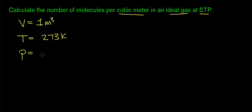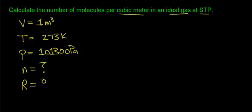Our pressure P will be 1 atmosphere or 101,300 pascals. We don't know the number of moles of gas n, so I'll write that as a question mark. And the universal gas constant R equals 8.31 joules per mole Kelvin.